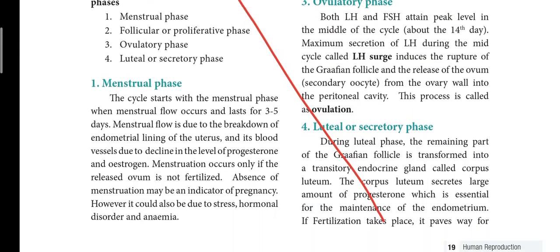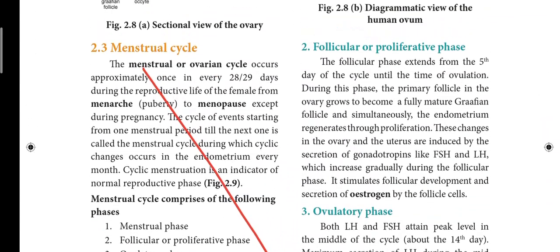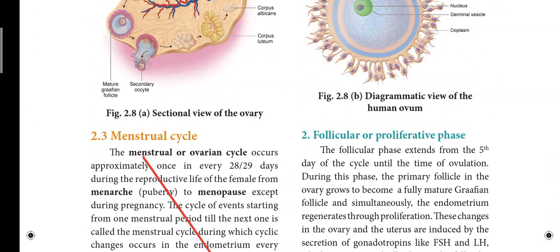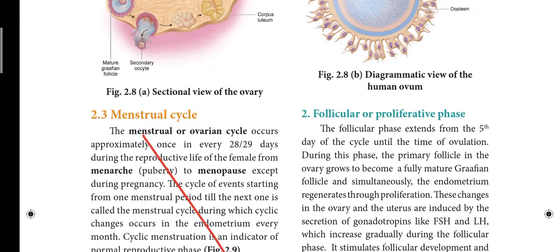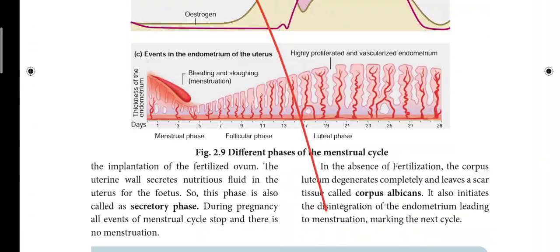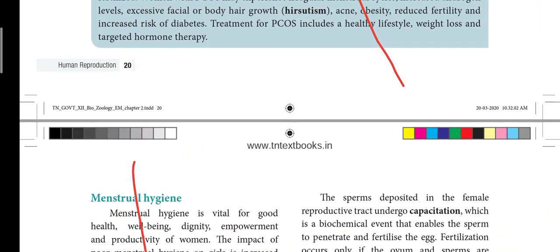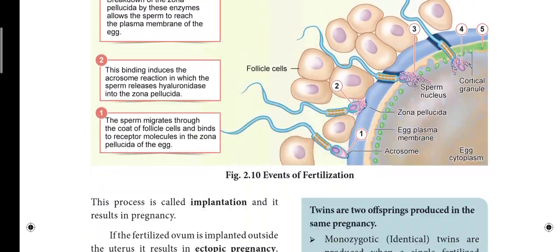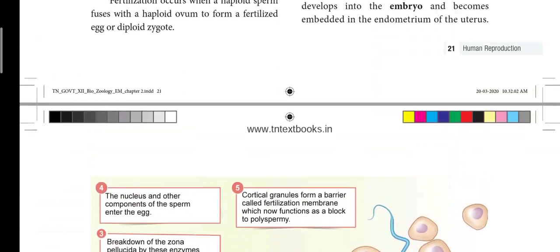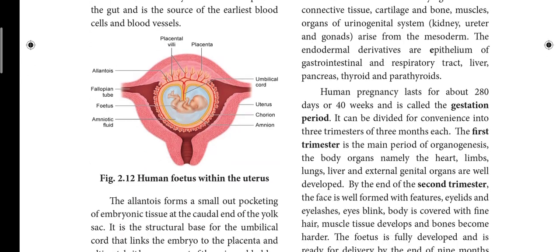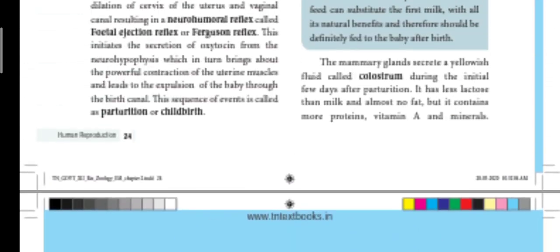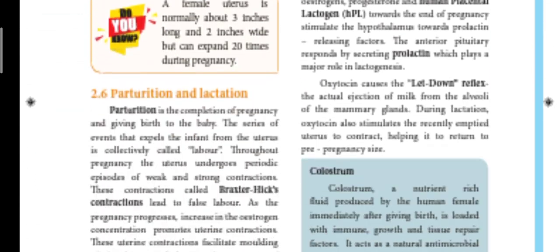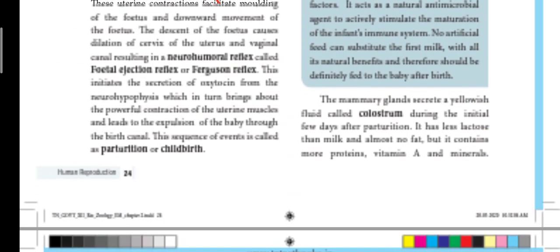The 2nd lesson starts at page 19. The menstrual cycle is a heading. The 1st page has the heading, and the 2nd section is full of strikeout on page 21. The left side covers fertilization and implantation. The 2.4 section is on page 24.